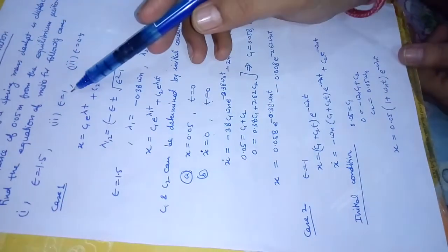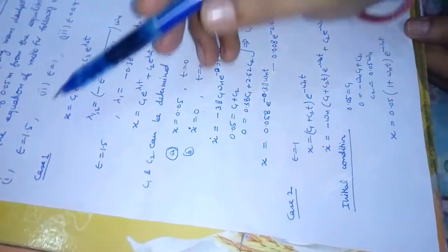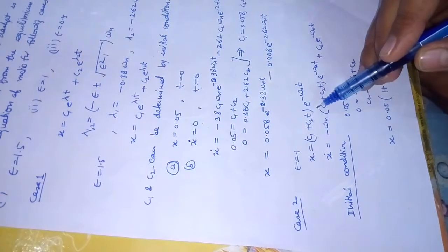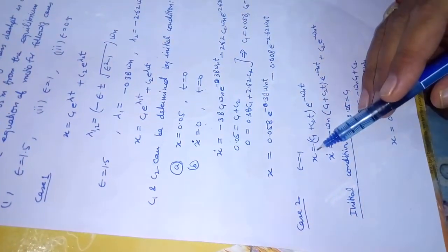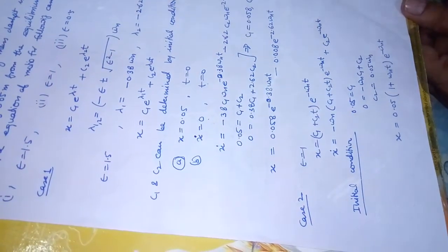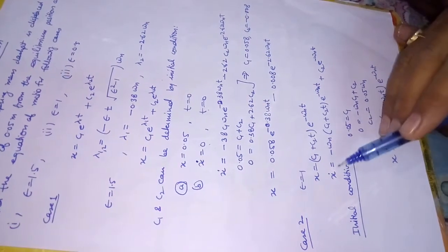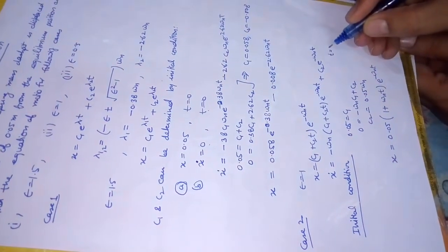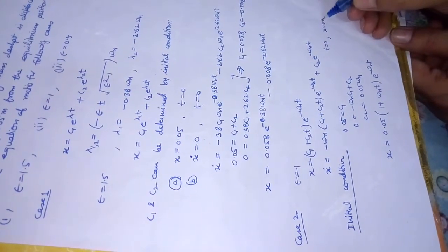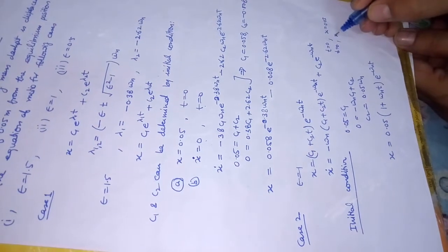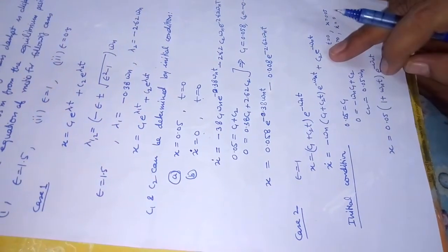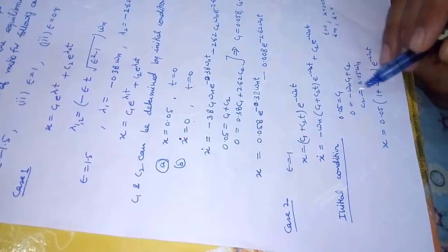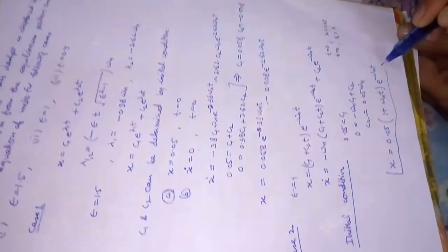For Case 2, ε = 1 (critically damped), the solution is x = (c₁ + c₂t)e^(-ωₙt). Using the same initial conditions — at t = 0, x = 0.05 and ẋ = 0 — we apply them to both the displacement and velocity equations to determine the two unknowns c₁ and c₂, and obtain the total displacement.